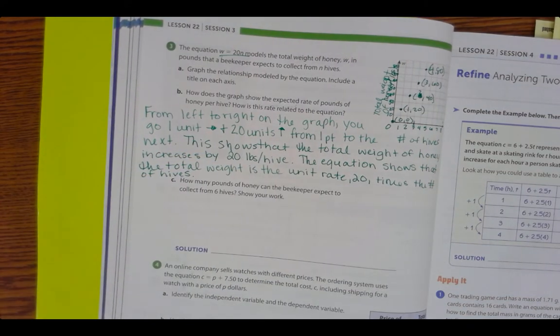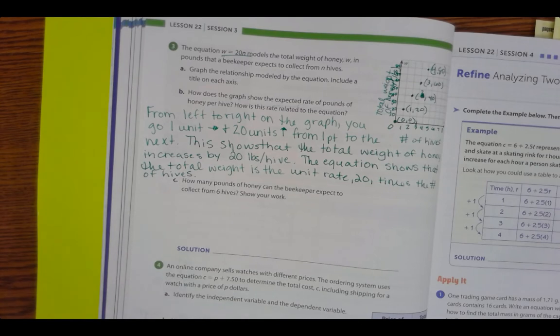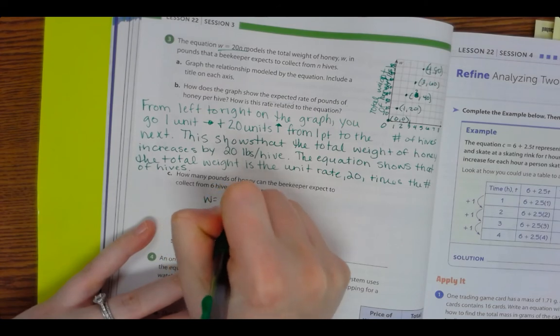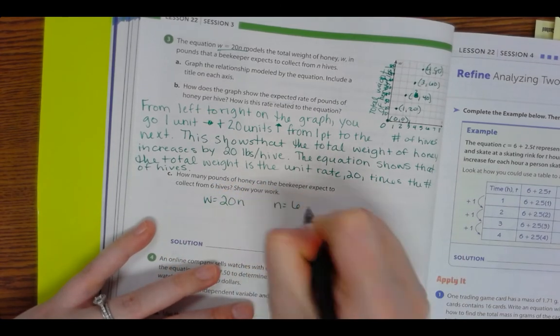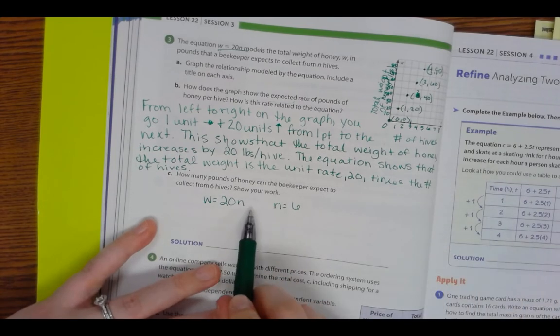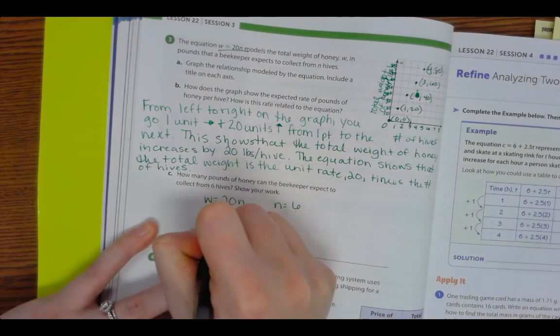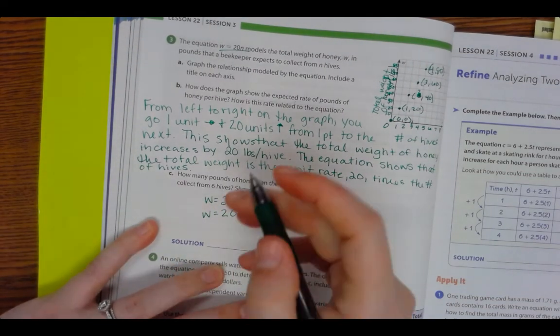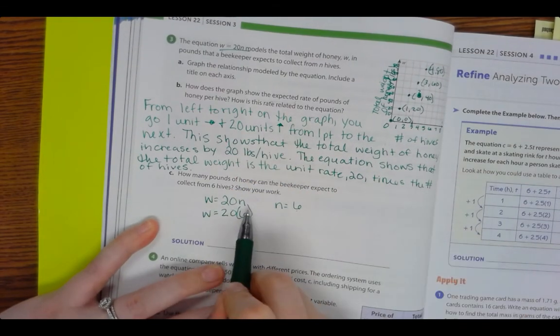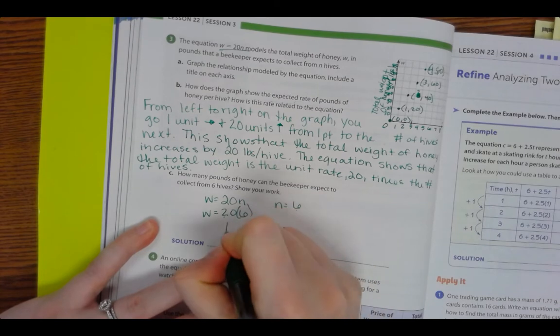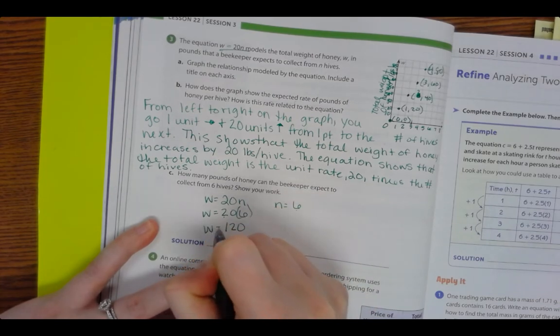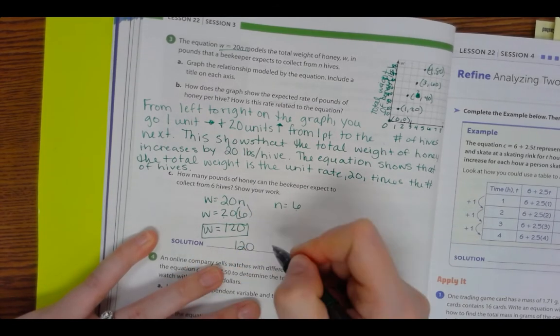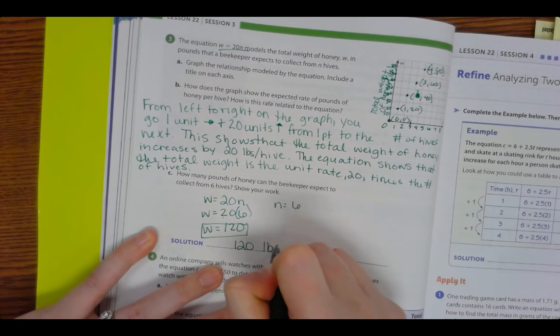Let's see, how many pounds of honey can the beekeeper expect to collect from 6 hives? So W equals 20 times N when N equals 6. All right, so wherever I see N, I'm going to plug in 6. So W equals 20 times 6. Well, I know that 6 times 2 is 12. I'm going to have a 0, so I get W equals 120. So I know the beekeeper can expect to collect 120 pounds of honey.